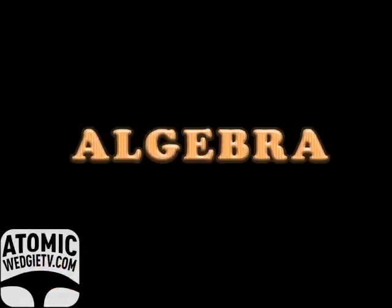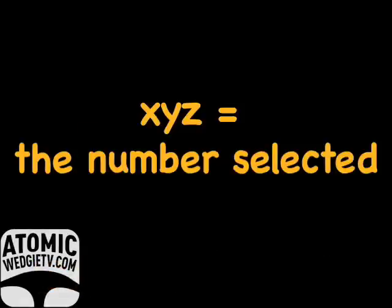The secret, algebra. XYZ represents the three digit unknown number that our mark gives us following the exact parameters we gave them. In math terms, it looks like this.